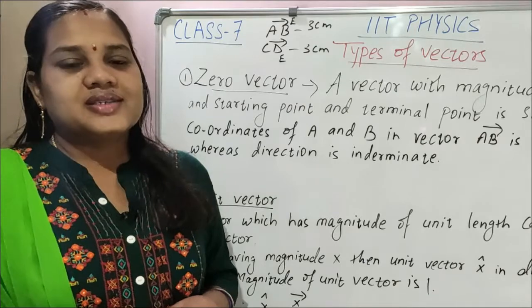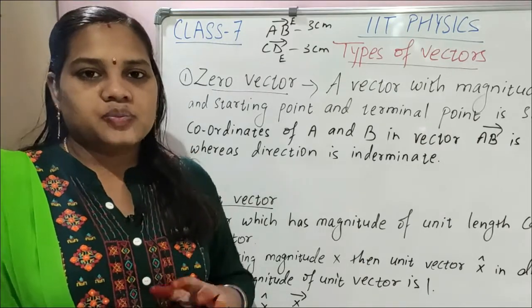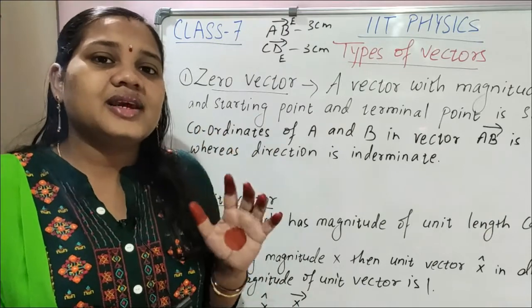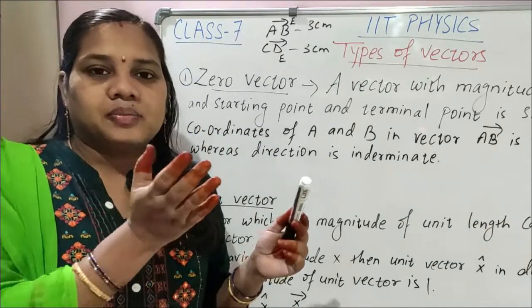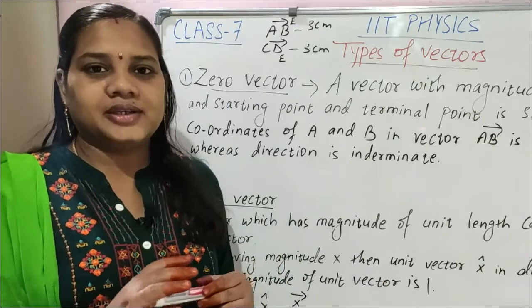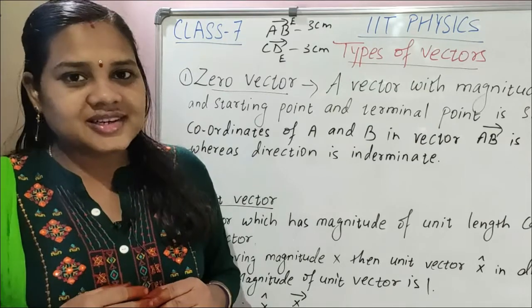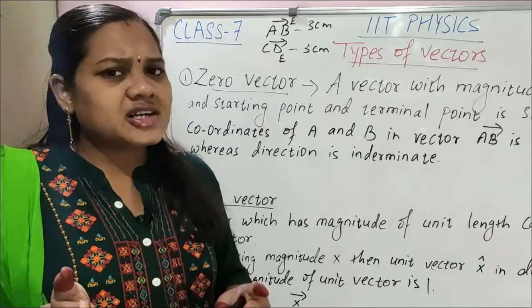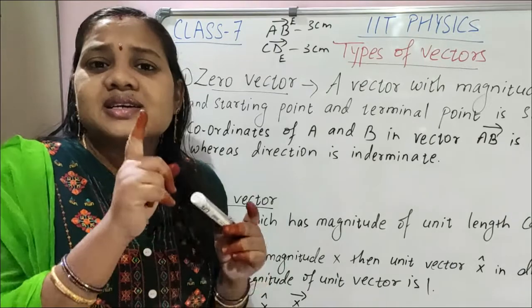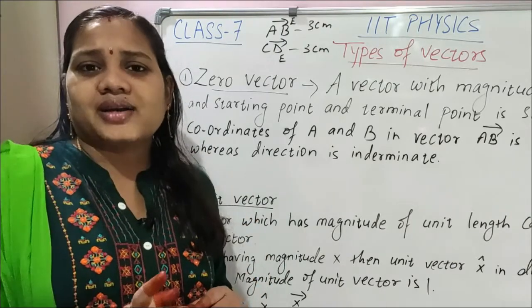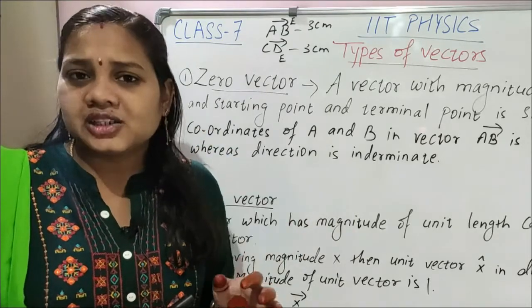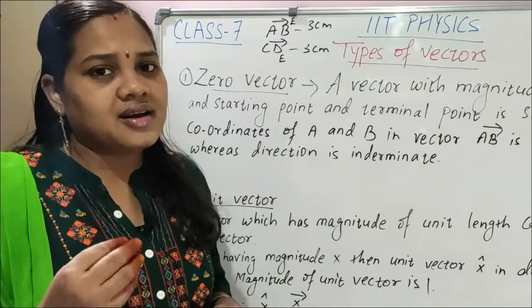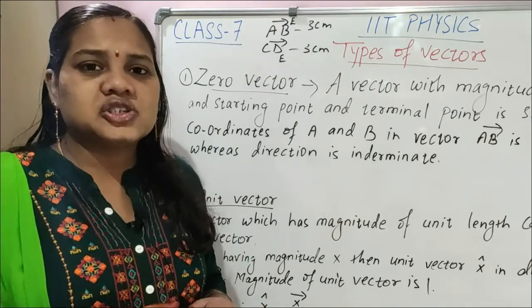Next we discussed like and unlike vectors. Like and unlike vectors means: two vectors, if their magnitude is different but they both point same direction, then they are known as like vectors. Suppose PQ is one vector of magnitude two centimeters and RS is one vector of magnitude five centimeters, but both are pointing west direction — they are like vectors. You have to see the direction. If they are directing same direction then they are like; if their direction is different then they are unlike. It's not necessary their magnitude is same or not.